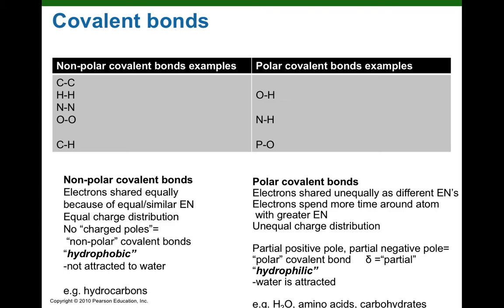Students have found the concept of non-polar and polar covalent bonds stressful, so another way to tackle it is to memorize a table. On the left-hand column we have examples of non-polar covalent bonds — a covalent bond between two atoms of the same element is always non-polar, and the only tricky one is carbon-hydrogen, which in biology is considered non-polar. For polar covalent bonds, just memorize these three examples: the oxygen-hydrogen covalent bond, the nitrogen-hydrogen, and the phosphorus-oxygen covalent bond.